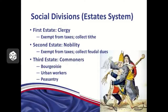The clergy had many benefits because they were part of the first estate. The second estate — the nobility — was also a very small portion of French society, about 2% to 5% of the population. They owned a lot of land too — anywhere between 20% and 30% — and like the clergy, the nobles were exempt from most taxes.